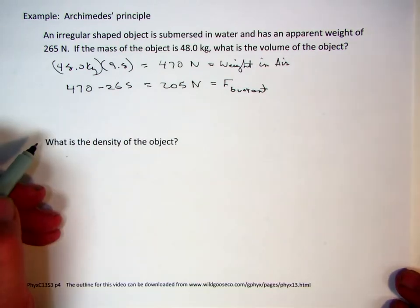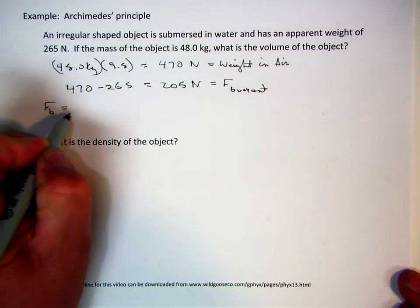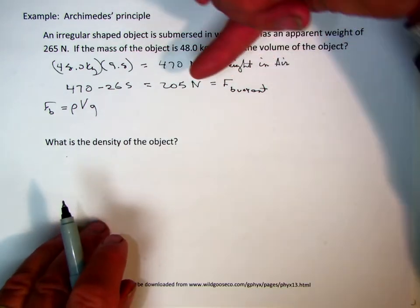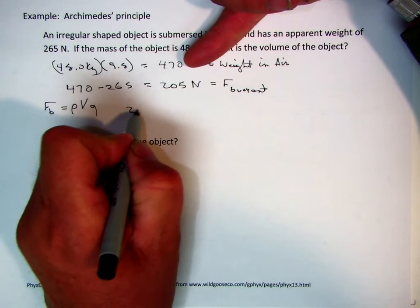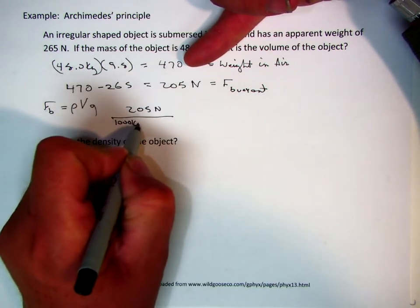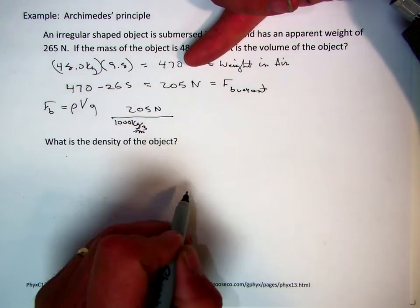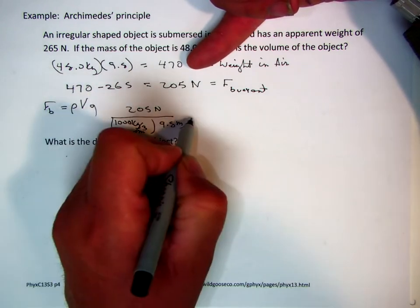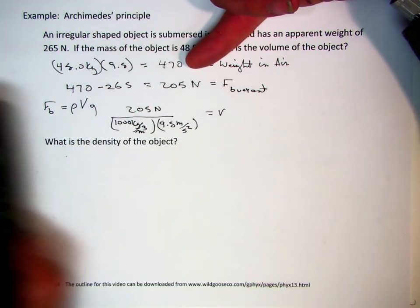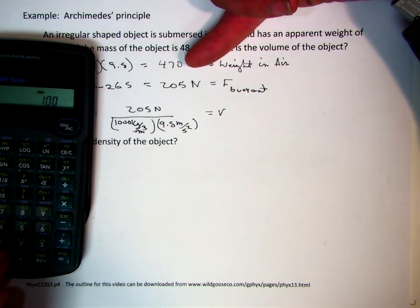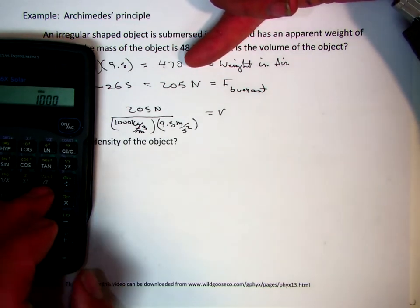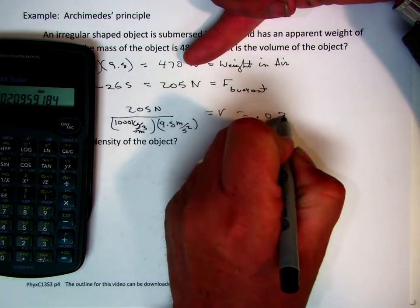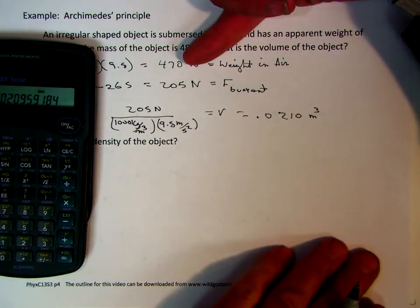So what is the volume of the object? Well, let's go back and look at our equation. F buoyancy is equal to the density of water multiplied by the volume multiplied by the acceleration of gravity. So if I divide that 205 by the density of water and the 9.8 meters per second squared, you're going to get the volume of the object. So 205 divided by 1,000, which happens to be the density of water, 1,000 kilograms per meter cubed, divided by the acceleration of gravity, 9.8, gives you the volume is equal to 0.0210 meters cubed.